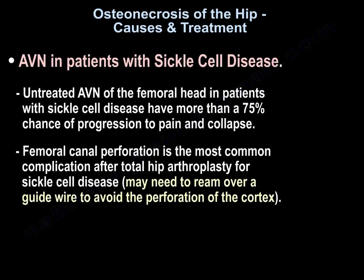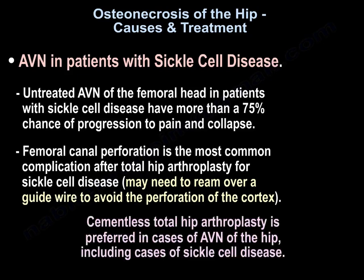For AVN in patients with sickle cell disease, untreated AVN of the femoral head has more than a 75% chance of progression to pain and collapse. Femoral head canal preparation is the most common complication after total hip arthroplasty for sickle cell disease. You may need to ream over a guide wire to avoid perforation of the cortex. Cementless total hip arthroplasty is preferred in cases of AVN of the hip, including sickle cell disease.